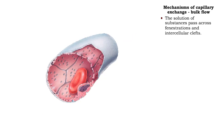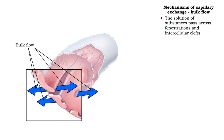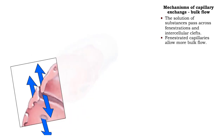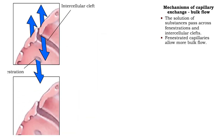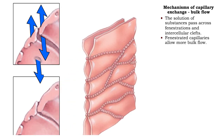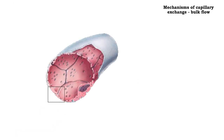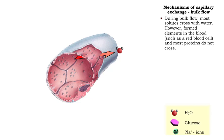Substances in the flow move in unison across fenestrations and intercellular clefts. Fenestrated capillaries allow more bulk flow than continuous capillaries. Tight junctions at the intercellular clefts of continuous capillaries allow little bulk flow.